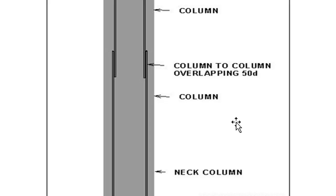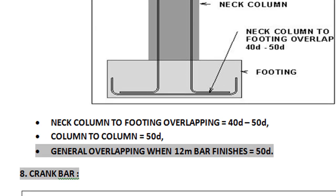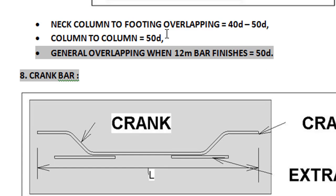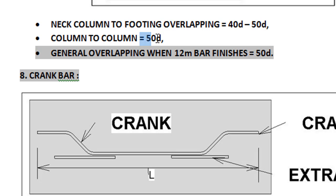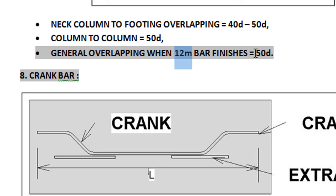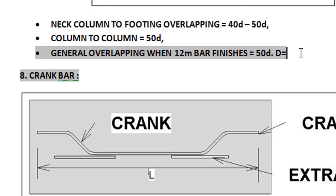To summarize overlapping values: column to footing overlap is 40d to 50d, where d is the diameter. Column to column, beam to beam, or any general bar joining takes 50d, where d is the diameter.